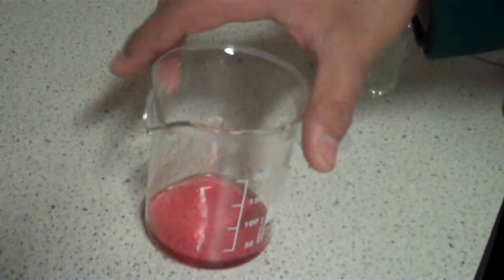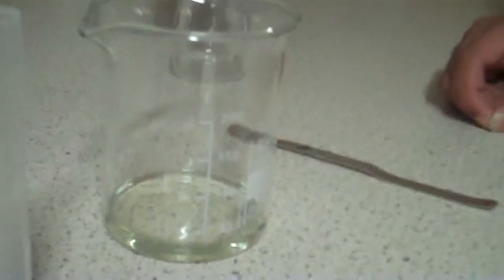In the first beaker we have a solution of cobalt 2 chloride mixed with 20 mils of distilled water. In the second one we have 1 mil of acetic acid. In the third one we have 8 grams of potassium nitrate mixed with 20 mils of distilled water.